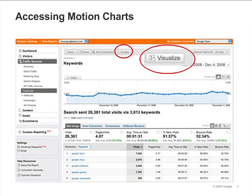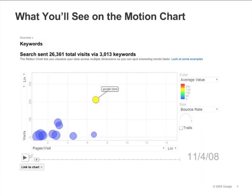Access motion charts by clicking Visualize. The Visualize button is available in most reports that show tables. Each dot on the motion chart will be a data point from the report that launched it.